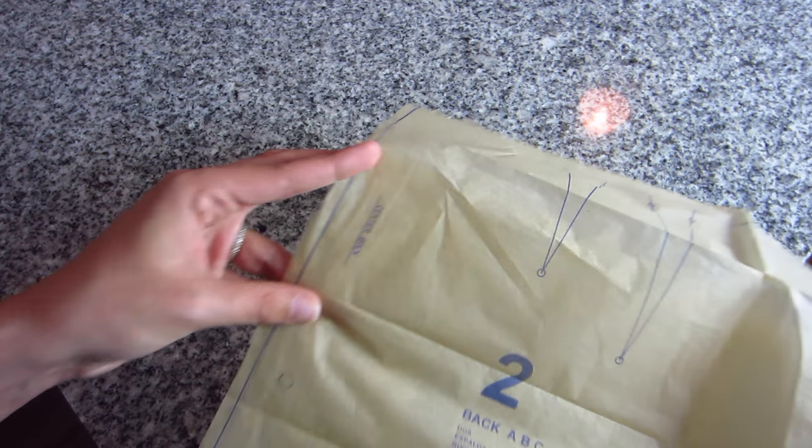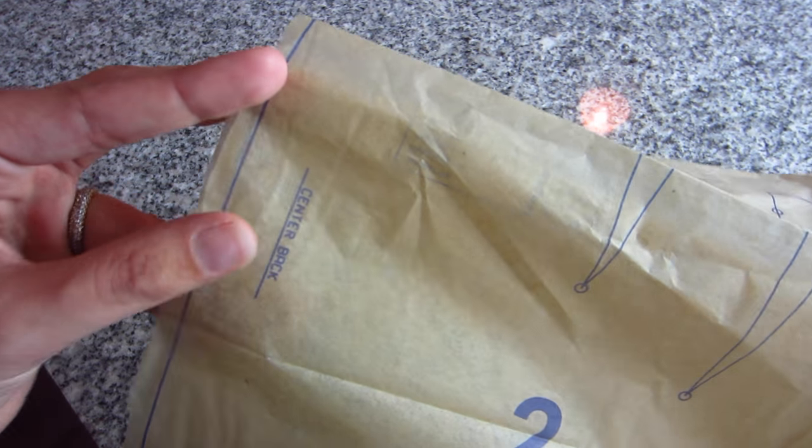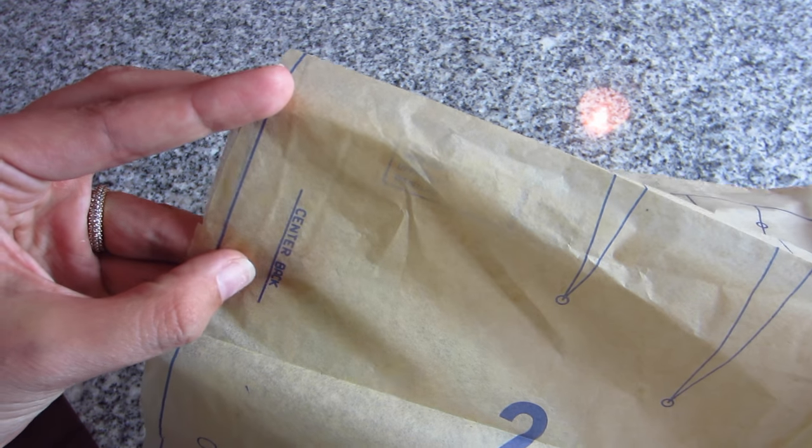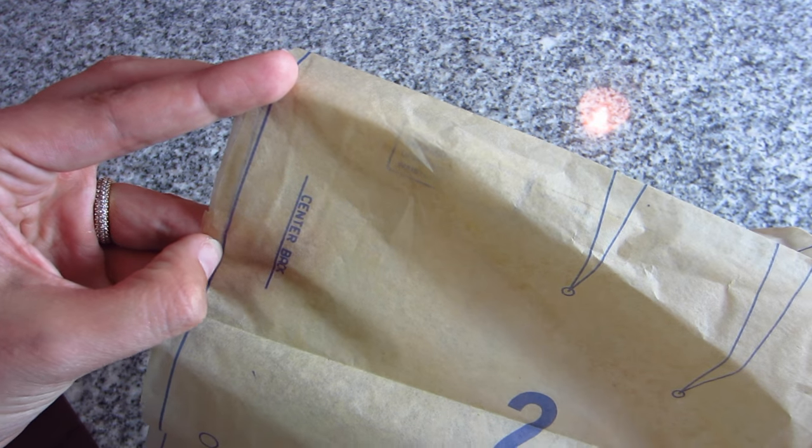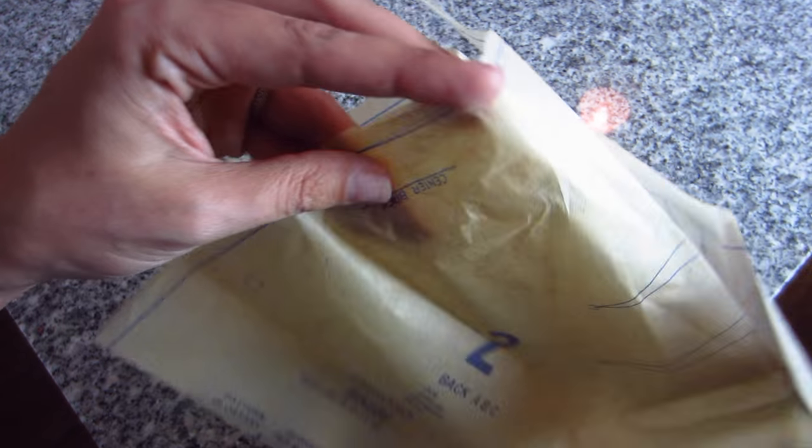So you'll see here it'll tell you center back, and that's your seam line. This is 5/8 inches difference because that's the seam allowance in this pattern. But it's just one long cut line instead of the front piece that had a fold there. This one doesn't have that little arrow anywhere, it just has one long cut line.